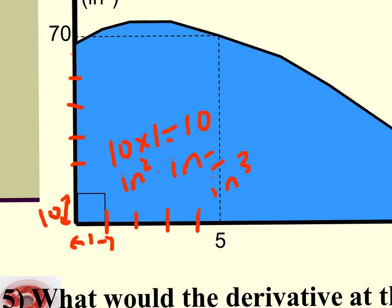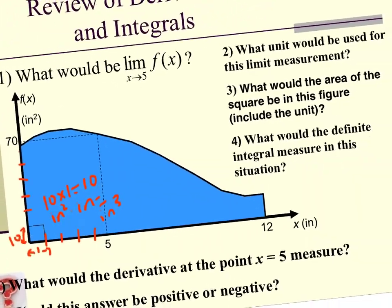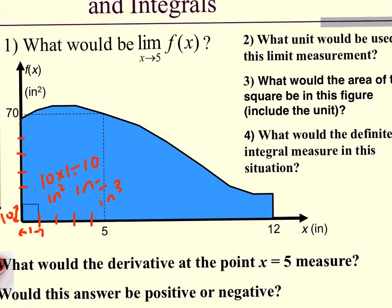So that means the area of one square is equal to 10 cubic inches. And that's the answer to question three. So the units kind of give me a hint of how to find the definite integral. Reminder that the definite integral measures the area under the curve. So if I were to count all the squares that fills in that blue area, the area would give me some number in terms of cubic inches,